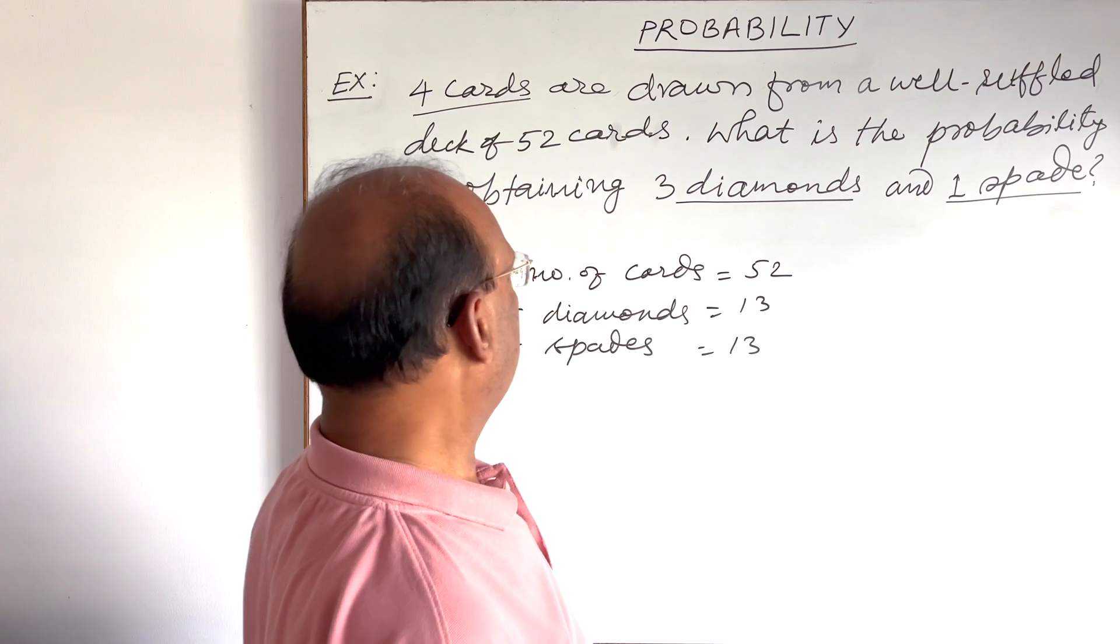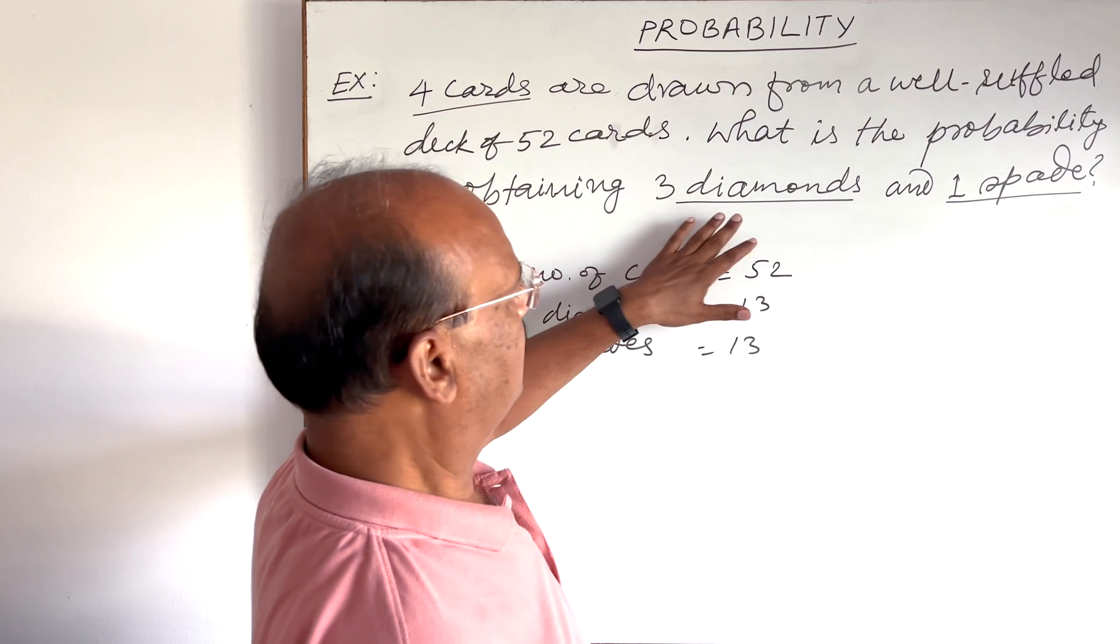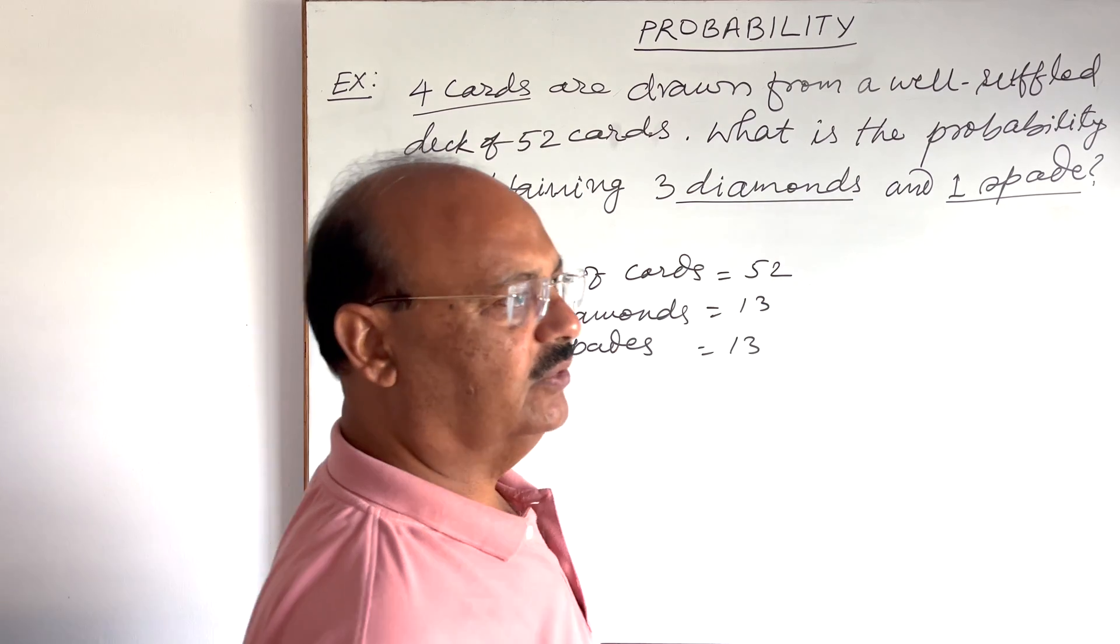So we need to know the probability that out of these four cards, three are diamond. So what is that probability?